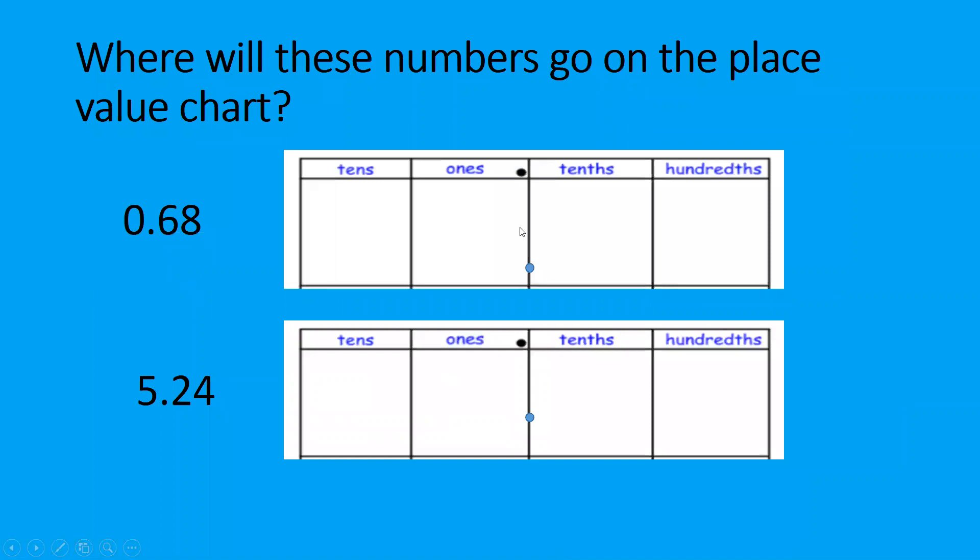Where will these numbers go on the place value chart? I've got 0.68. I can't see any whole numbers. So there's no ones and no tens, but there is six tenths and eight hundredths. And likewise with 5.24. I do see that there's a whole number. So we have five ones, two tenths, and four hundredths. Well done if you got that.